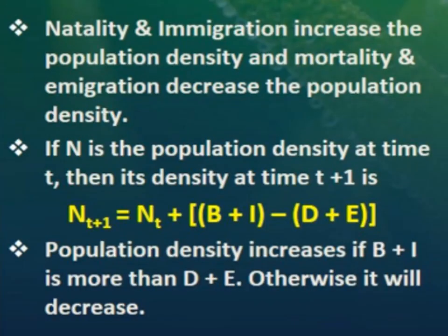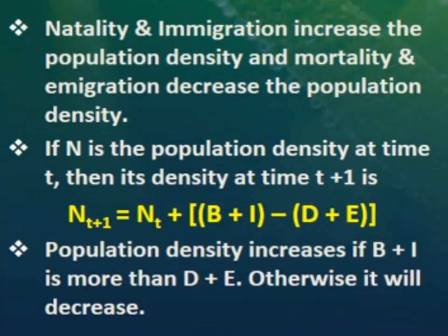Natality and immigration increase population density: higher birth rate means more individuals, and if individuals come from another habitat, population density increases. Mortality and emigration decrease population density. If N is the population density at time t, then its density at time t+1 will be: N(t+1) = N(t) + B + I − D − E, where B is births, I is immigration, D is deaths, and E is emigration.